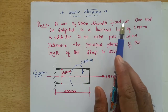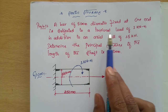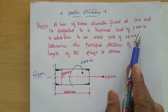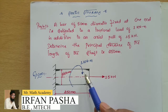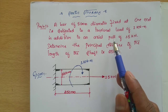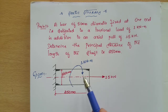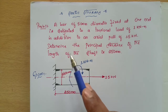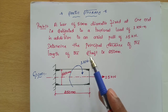A bar of 50 mm diameter is fixed at one end. It is subjected to a torsional load of 1 kilo Newton meter — that is a twisting moment of 1 kilo Newton meter — in addition to an axial pull of 15 kilo Newton. So there will be an axial load of 15 kilo Newton acting, and a twisting moment of 1 kilo Newton meter. We need to find out the principal stresses of the shaft.